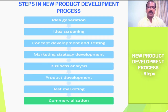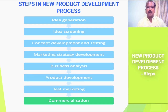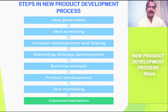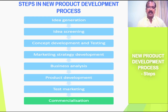Regarding the steps in the new product development process, there are 8 steps every product passes through in its development. These are: 1. Idea Generation, 2. Idea Screening, 3. Concept Development and Testing, 4. Marketing Strategy Development, 5. Business Analysis, 6. Product Development, 7. Test Marketing, and the last stage is Commercialization.